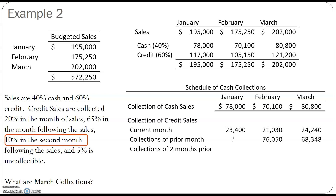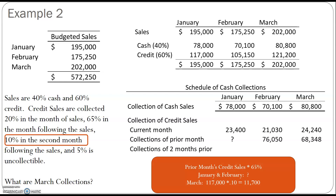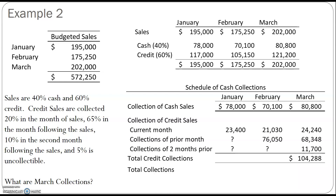Next we see that credit collections are collected 10% in the second month following the sale. That means if a sale takes place in January, 10% of those credit sales are collected two months later in March. We don't have the November and December sales information, but we don't need it since we're just calculating March. We know that in March they'll collect 10% of the sales that occurred two months ago in January, so we add that into our schedule and total up the credit collections.